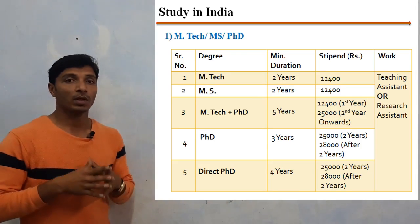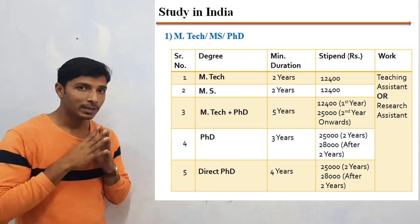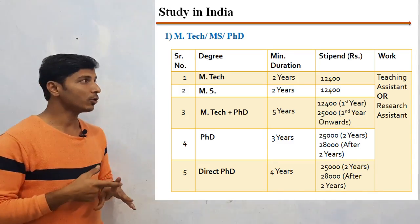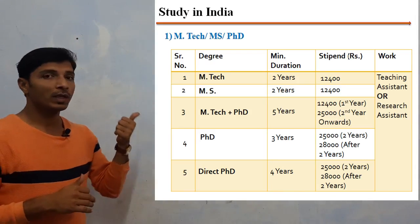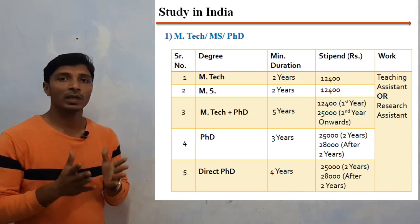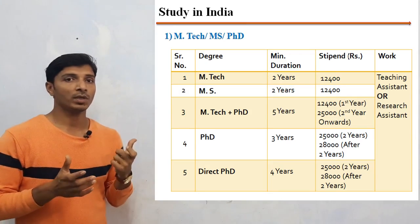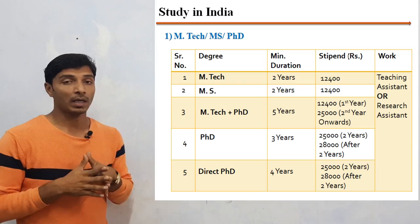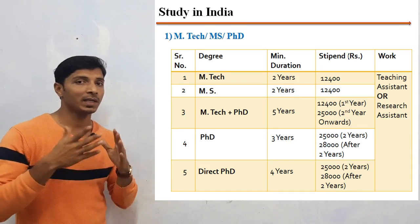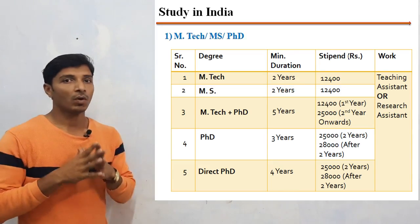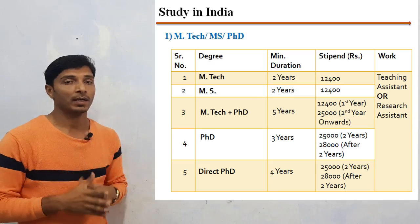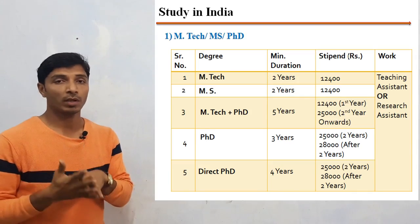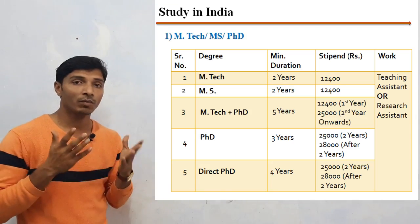The third option is a dual degree — M.Tech plus PhD. You are first admitted to M.Tech for the first year to complete the course requirements, then directed to PhD. For the first year you receive ₹12,400 as a stipend, and from the second year onwards ₹25,000. The minimum duration is 5 years, which may extend to 6 to 7 years, after which you receive both M.Tech and PhD degrees. If you have already done your M.Tech and qualified GATE, you can apply for direct PhD, with a minimum duration of 3 years.